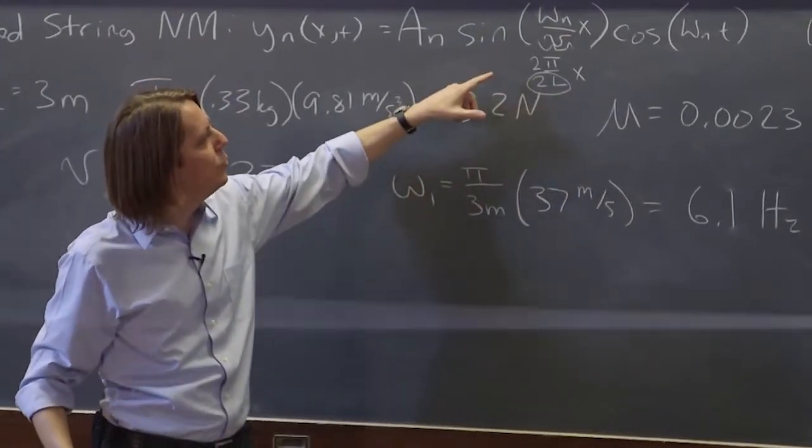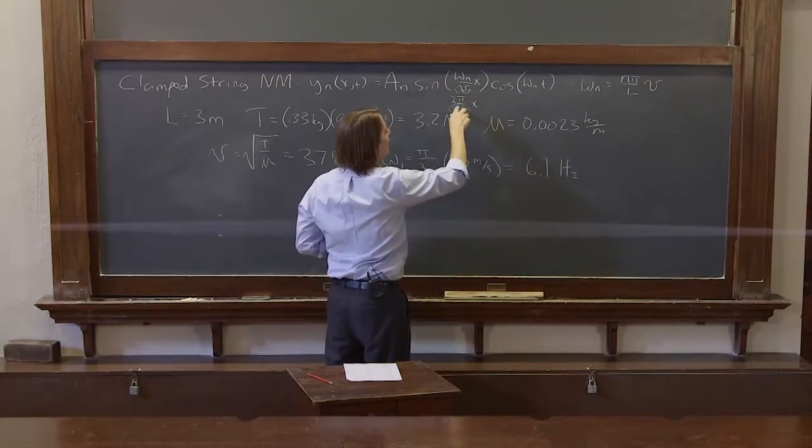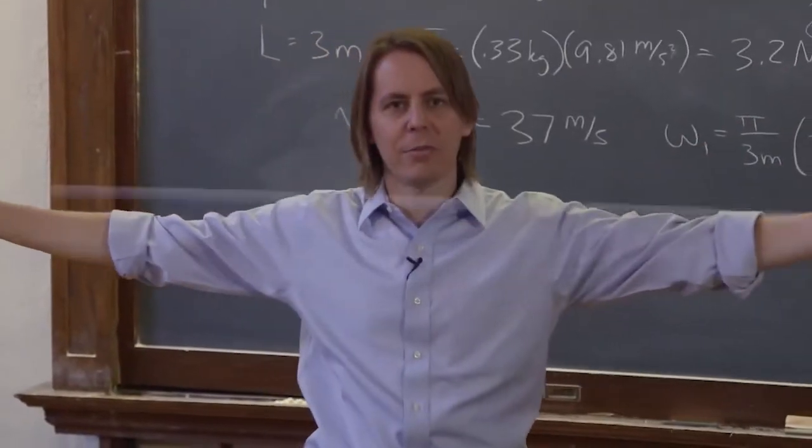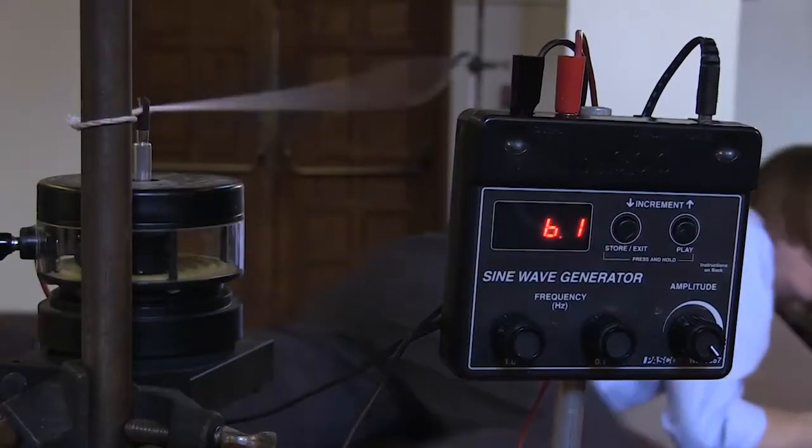And we know that's correct for n equals 1, because it should be half a wavelength. n equals 2 would already put a 2 here. From the n, you'd have 2 pi over L. The wavelength for n equals 2 should be the whole thing, the entire length from 0 to L. So let's see if that works out here.